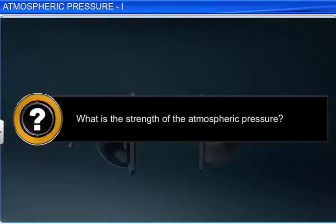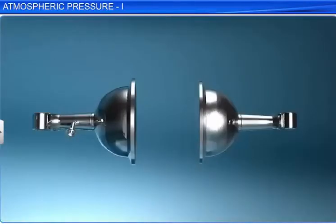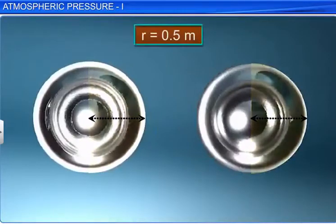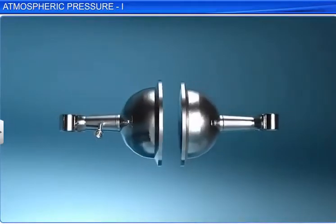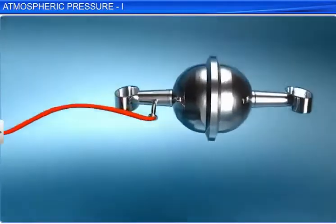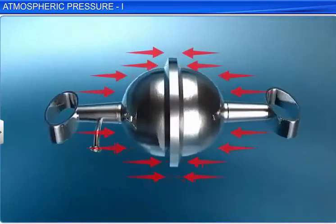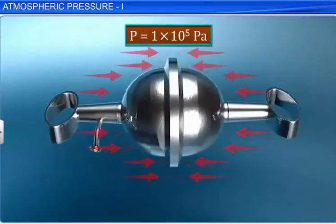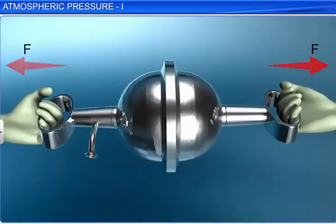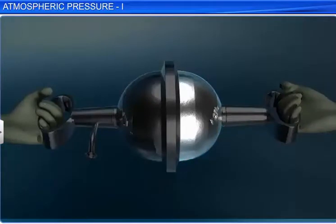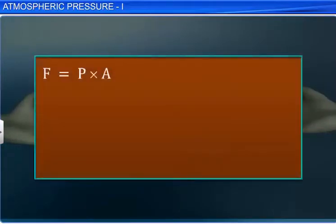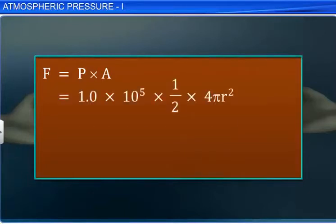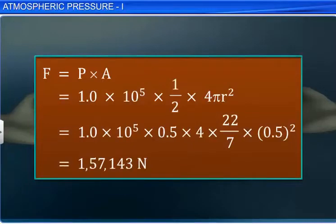What is the strength of atmospheric pressure? Consider a sphere made of two hollow hemispheres, each of radius 0.5 meter. The air inside the sphere is removed, and the hemispheres are pressed together by atmospheric pressure, which is equal to 1 × 10⁵ pascal. If the two hemispheres were to be separated, the minimum force required would be the product of the atmospheric pressure and the area of one hemisphere. Substituting the values and simplifying, we get the value of the force F as 1,57,143 newton.